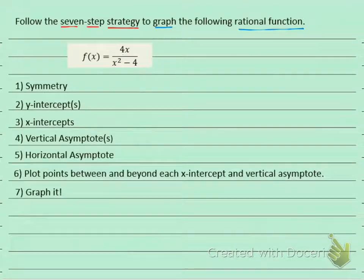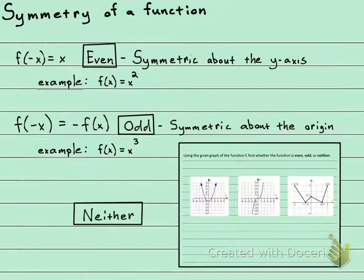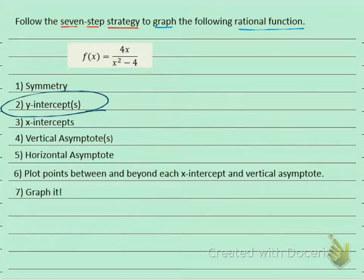The second step of graphing a rational function is to find the y-intercepts. How do you find a y-intercept? Same way we've always found a y-intercept - set x equal to 0. How do you find a y-intercept? Plug in 0 for x.